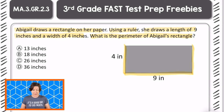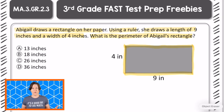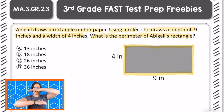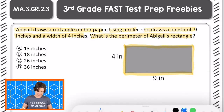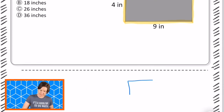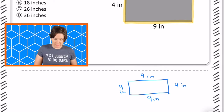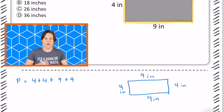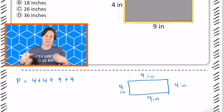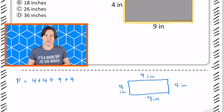4 inches, because opposite sides are congruent. And then going here, we would have a length of 9 inches, because our opposite side is congruent. So that means the same rectangle would be 4 inches, 9 inches, 4 inches, and 9 inches. And if we add up all the sides, that would be the perimeter equals 4 plus 4 plus 9 plus 9 — or 9 plus 9 plus 4 plus 4 — we've got the commutative property of addition going on right here.